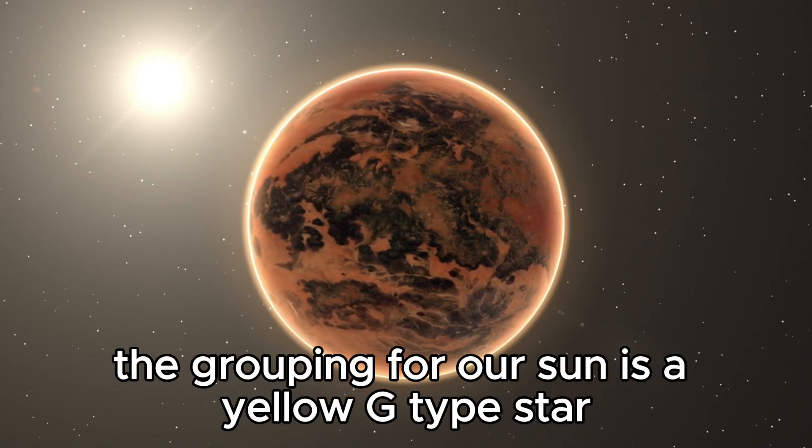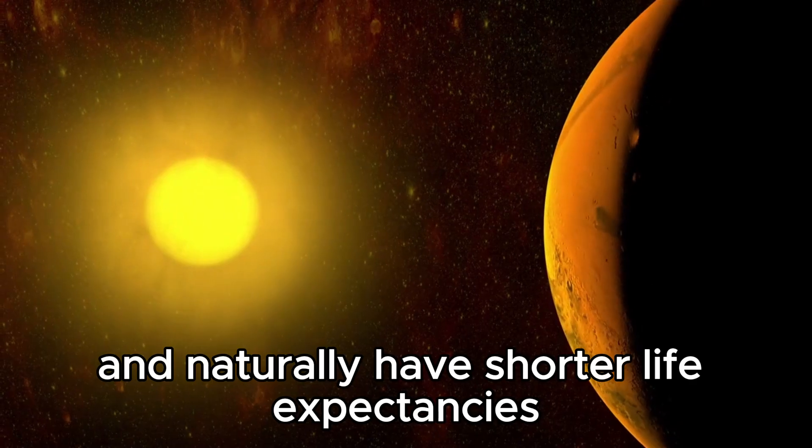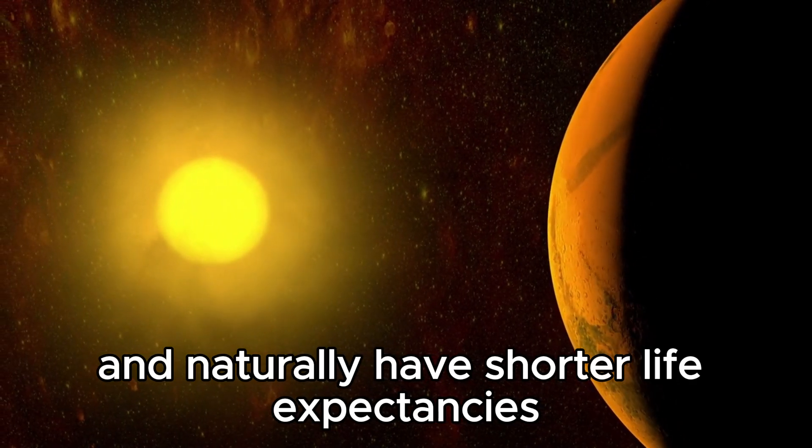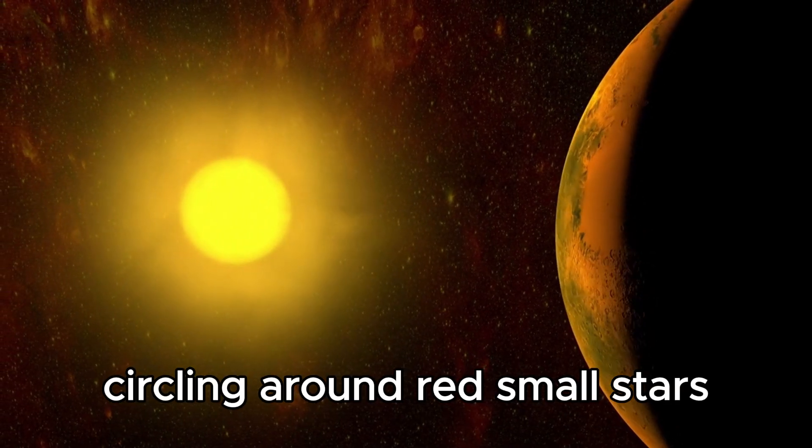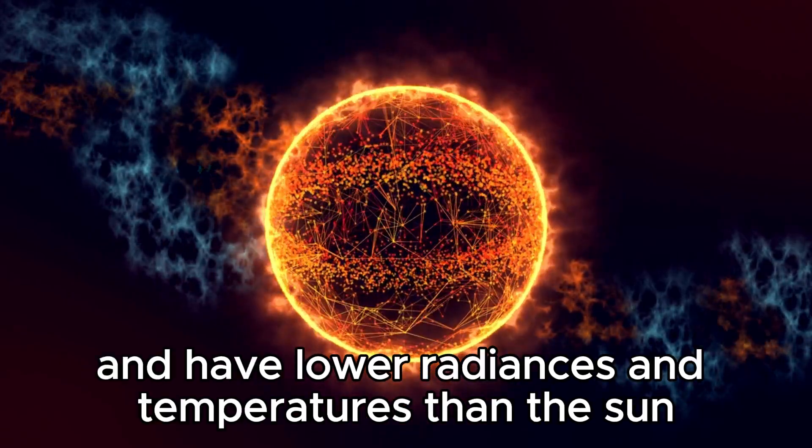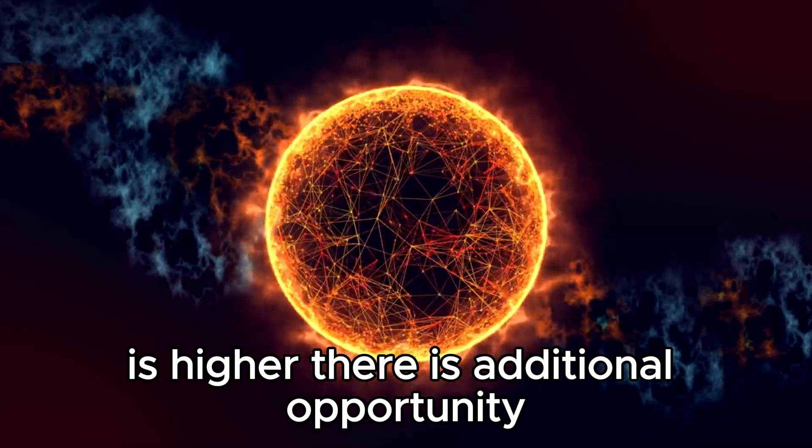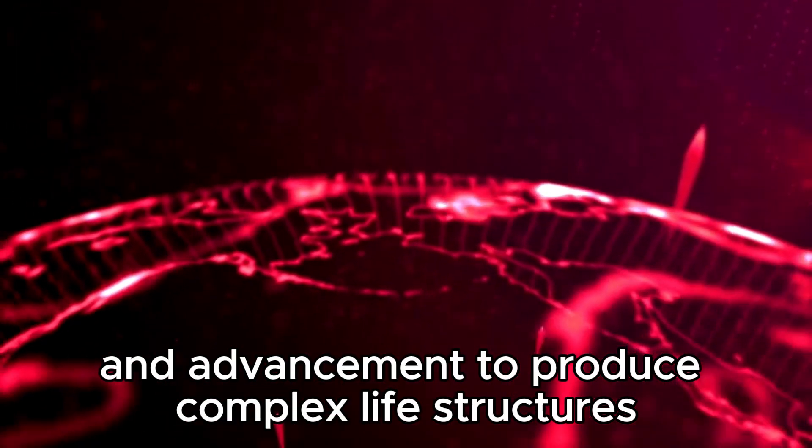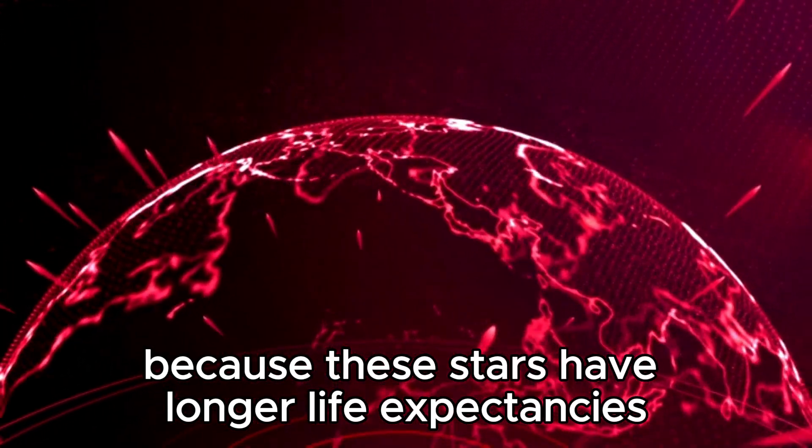Since planets like Earth are bound to support life, it could be a decent thought to begin with those first. Prime candidates could have temperatures that permit liquid water to exist on their surfaces and orbit a steady star. Our Sun is a yellow G-type star. These stars are more uncommon and naturally have shorter lifespans. The probability of considering planets circling around red dwarf stars, which are more frequent and have lower luminance than the Sun, is higher. There is additional opportunity for the arrangement of life because these stars have longer lifespans.